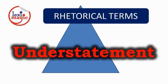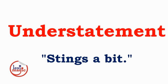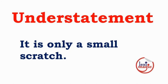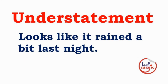Understatement is the opposite of hyperbole — one writes or says less than what is intended. It is used to create comedy, to indicate modesty, or just to be polite. In Monty Python's The Meaning of Life, an army officer who just lost one of his legs in battle responds when asked about his bloody stump: 'Stings a bit.' Other examples: getting the highest grade in class and saying 'I did okay on the test'; scraping the entire side of your car and saying 'it's only a small scratch'; describing a huge storm as 'looks like it rained a bit last night.'